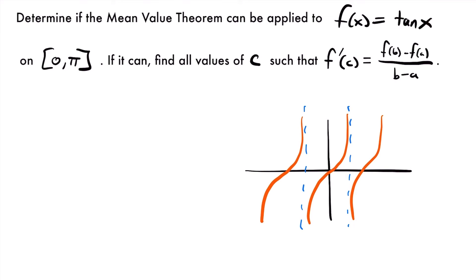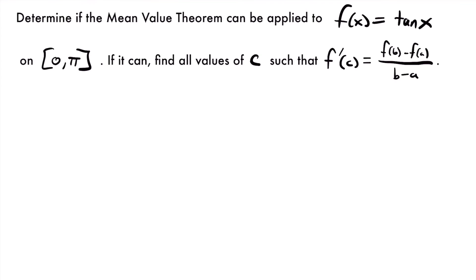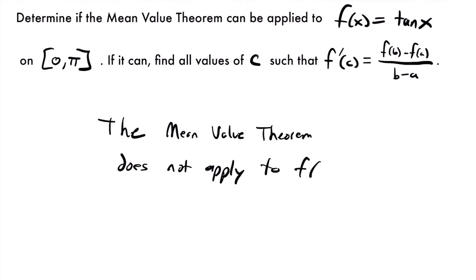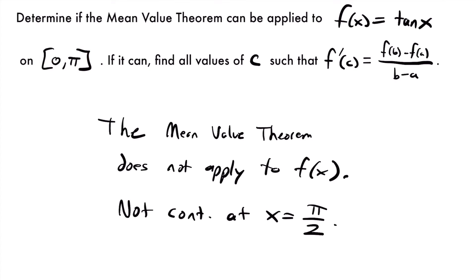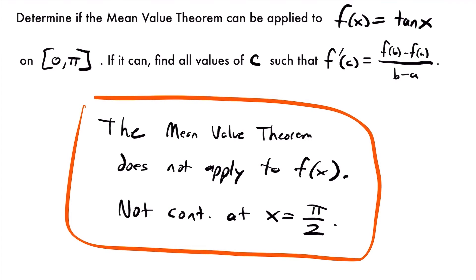If you plug pi over 2 into tangent on your calculator, it would give you an undefined value. Remember that tangent is equal to sine x divided by cosine x, and cosine of pi over 2 is 0, so you would have 0 in the denominator, which gives you an undefined value. Because of that, tangent x is not going to be continuous on this interval. So the mean value theorem does not apply to f of x. Our reason is that it is not continuous at x equals pi over 2, which is on our interval from 0 to pi.